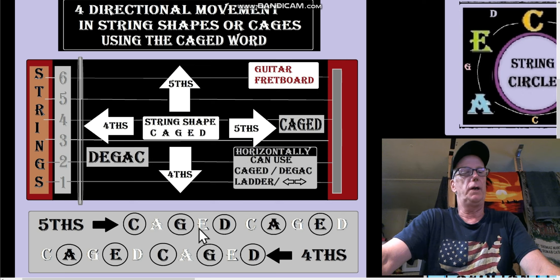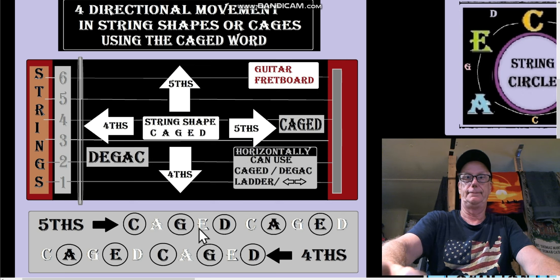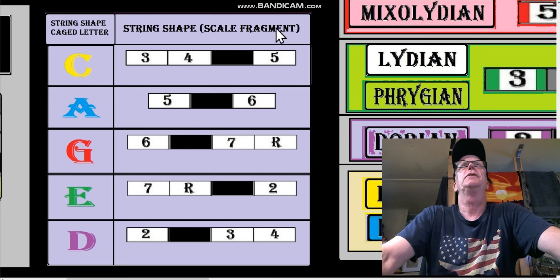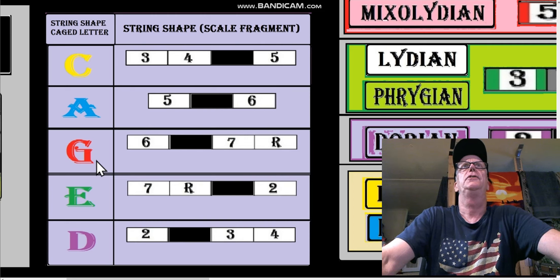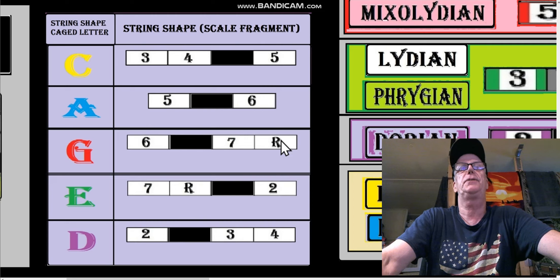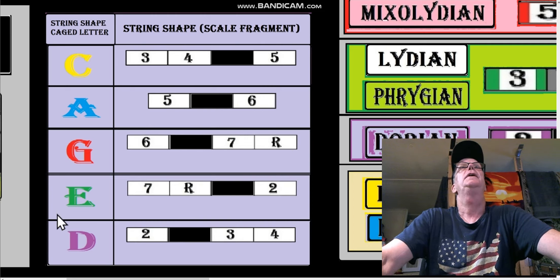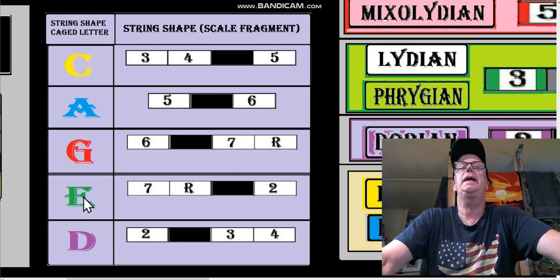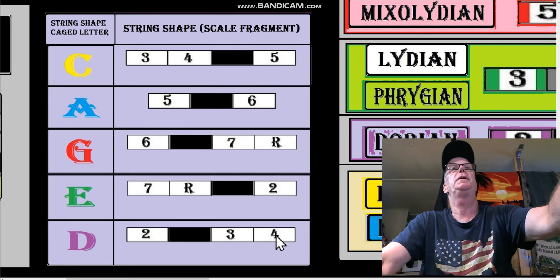So let's look at what are the string shapes. C is three-four-five, A is five-six, G - any key now - G is six-seven-root. So if root is C, G would be A-B-C, it's that easy. The E string shape is seven-root-two. In the key of A that would be G sharp-A-C sharp. The D string shape is two-three-four. Key of B flat would be C-D-E flat.